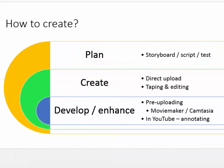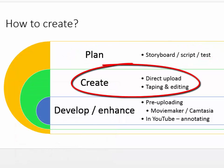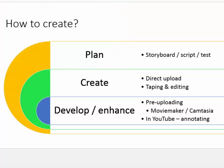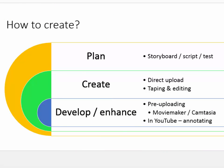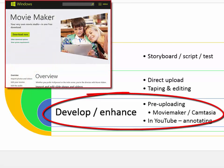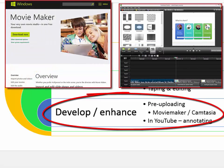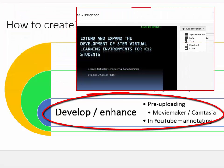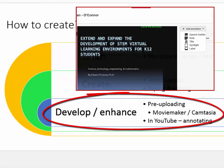Once you've created the video, you can either directly upload it to something like YouTube or Facebook, or you can stop and do editing before uploading it. Today you can do some pre-development work before you upload using tools like Movie Maker or Camtasia, which is more sophisticated. And even when you're in the editors, such as in YouTube, you'll often have ways to annotate and enhance your work.